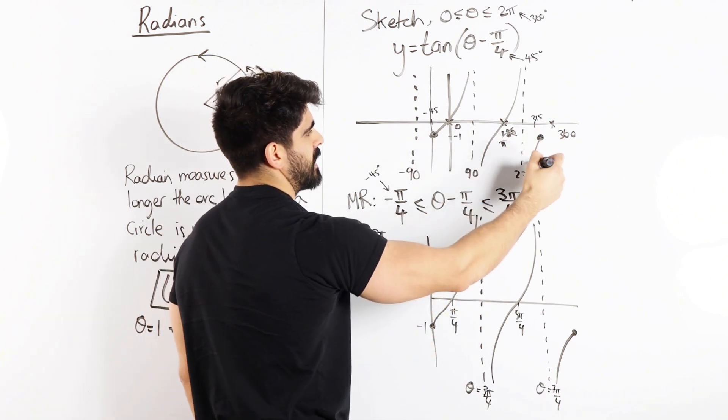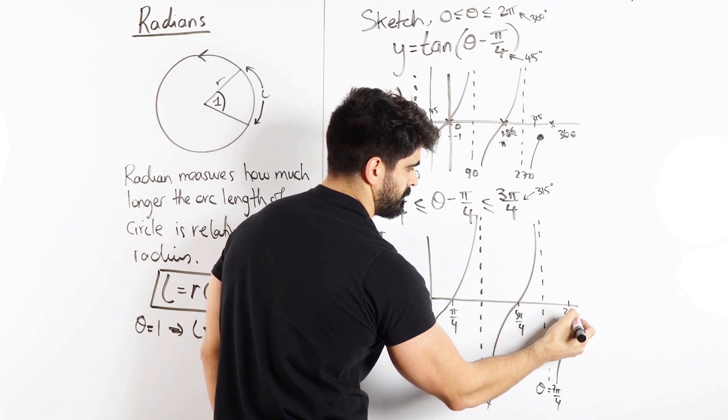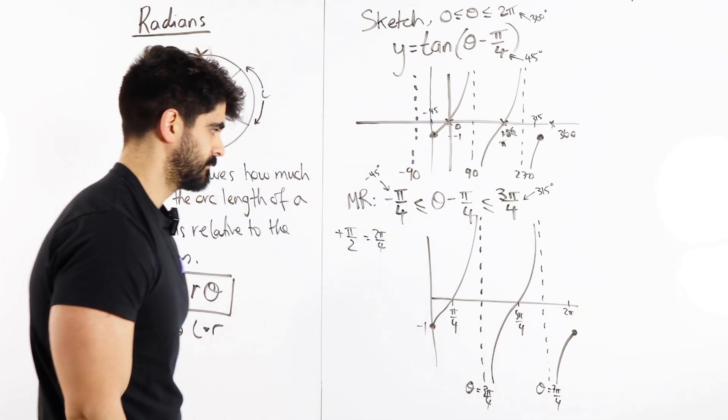And in between here and here is 45. So this is where we get to our 2 pi. And there you go. There's your graph.